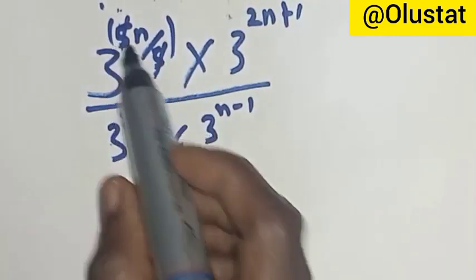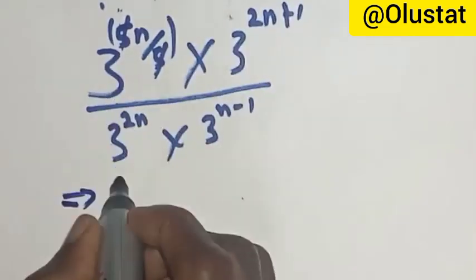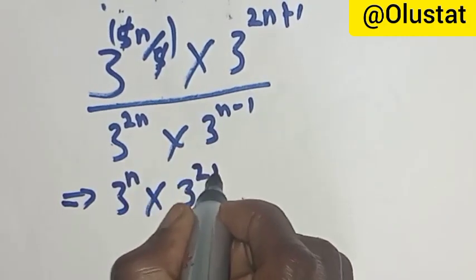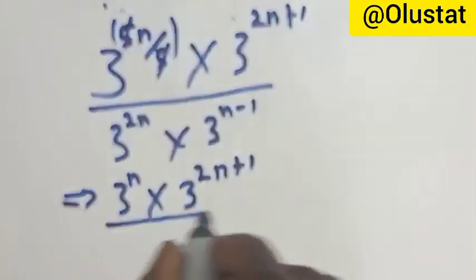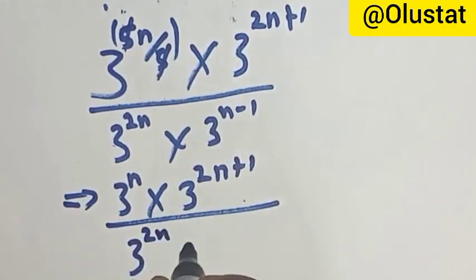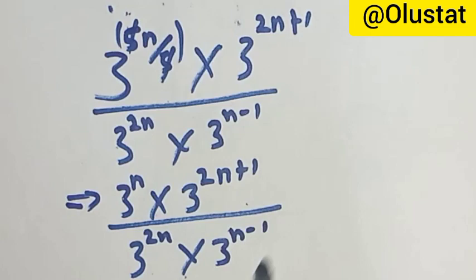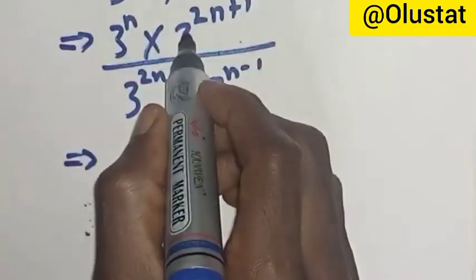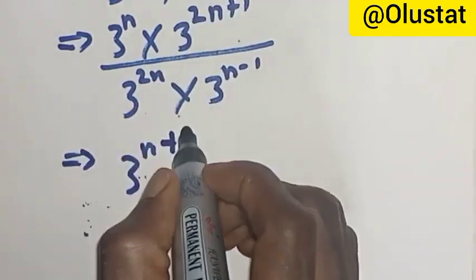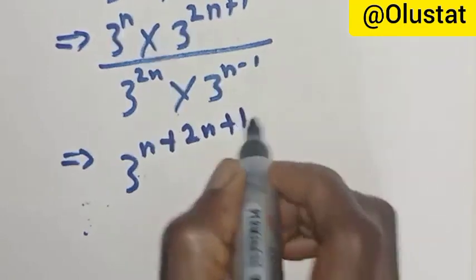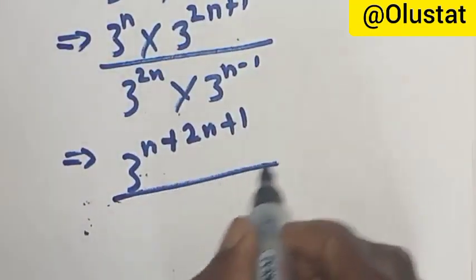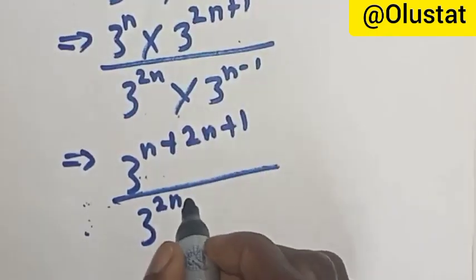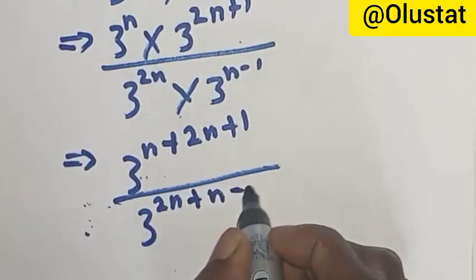Since this 5 cancels this 5, we are left with: 3 raised to power n, multiplied by 3 raised to power 2n plus 1, over 3 raised to power 2n, multiplied by 3 raised to power n minus 1. This can be written using the law of indices — when multiplying terms with the same base, we add the powers: n plus 2n plus 1 in the numerator, and 2n plus n minus 1 in the denominator.